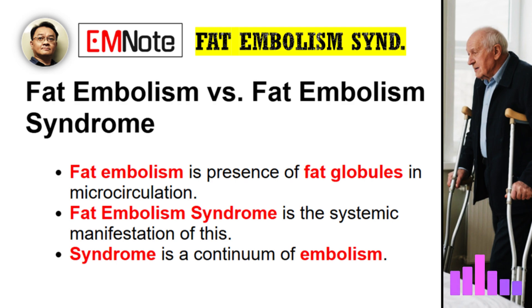That's a key distinction. So how does that differ from just a plain fat embolism? Are they totally separate things? A fat embolism itself just means the presence of fat globules in the microcirculation — that's the initial event. Fat embolism syndrome, FES, is the systemic manifestation of that, the clinical picture that results. It's really considered a continuum: you get the emboli, and if the body reacts significantly, it progresses to the syndrome. The syndrome means there's a significant clinical impact happening.